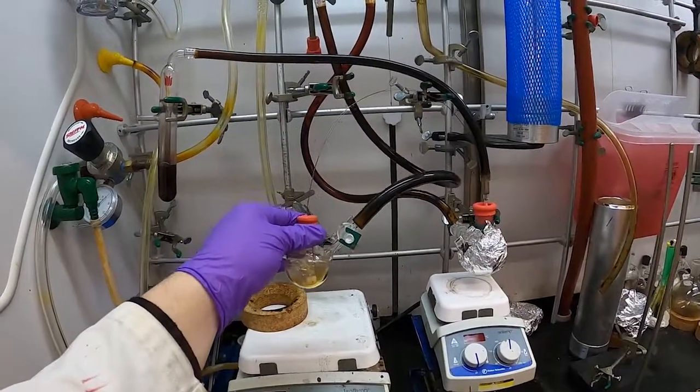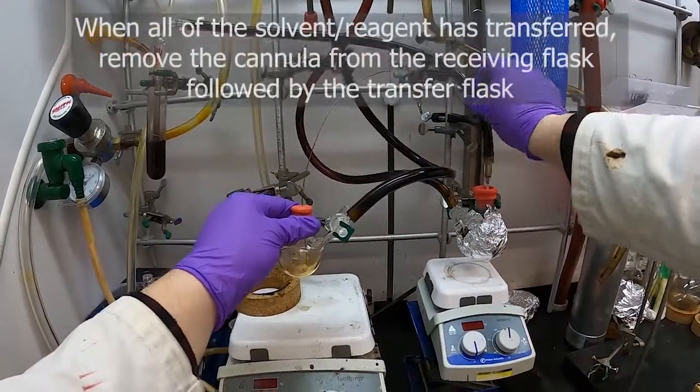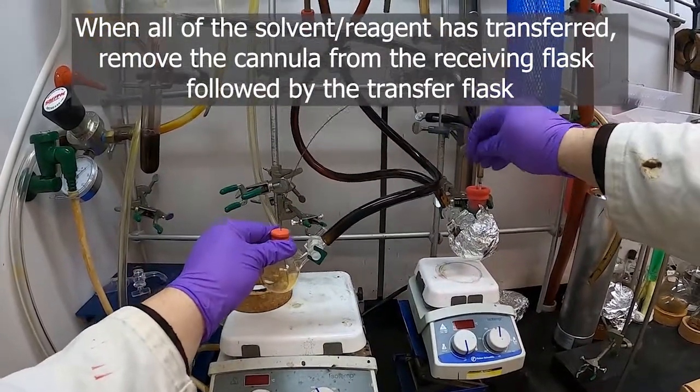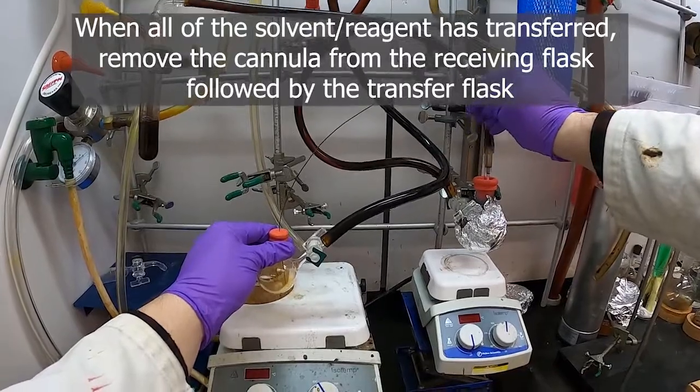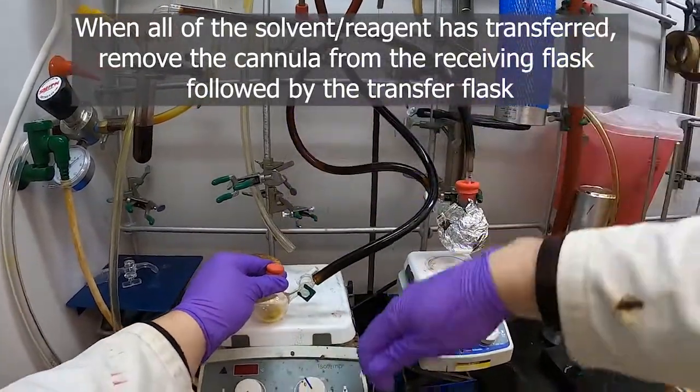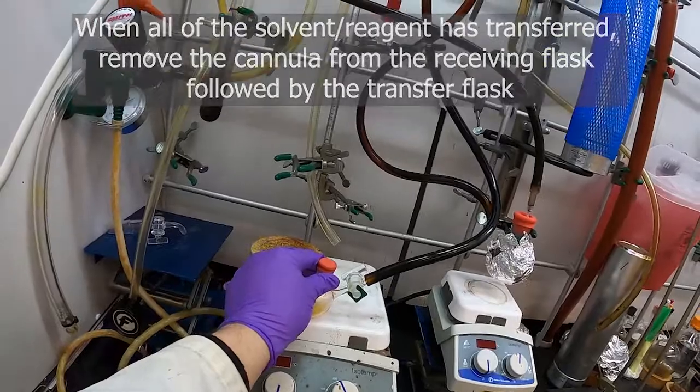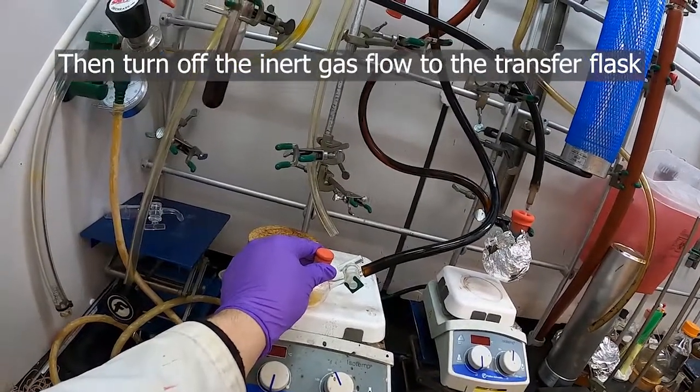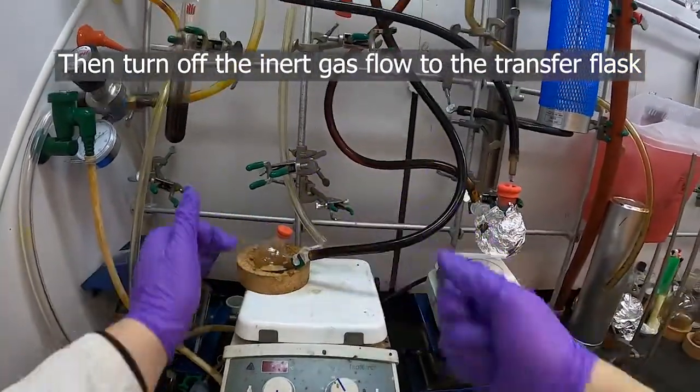All right, so now that all of our solution is transferred over, we'll just reverse the steps. We'll remove this right here and this one from there. Turn off the nitrogen on this now empty flask.